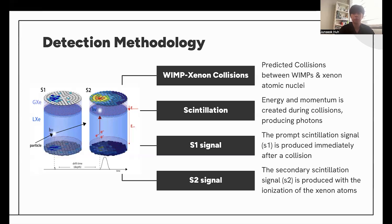The secondary scintillation signal is produced with the ionization of the Xenon atoms later on. The delay time between S1 and how much time it takes for S2 to come can be used to reconstruct the 3D position of where exactly the collision happened within the detector. The ratio of the intensity of S1 and S2 signals can be utilized to see what particular type of collision has happened, whether it is actually a WIMP xenon collision.